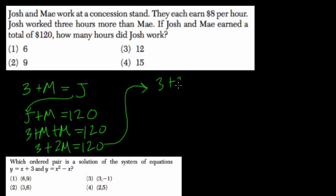Let's solve for M. So 3 plus 2M equals 120. Subtract 3 from both sides, 2M equals 117. But I feel like I did something wrong because you can't divide 117 by 2. Right? So let's backtrack.